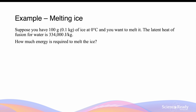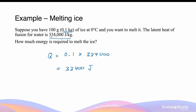Let's go through some examples. Suppose you have 100 grams of ice at zero degrees Celsius and we want to melt it. The latent heat of fusion is 334,000 joules per kilogram. To find the total energy required, we multiply the mass in kilograms by the latent heat. This gives us 33,400 joules. Note that even though the mass was initially given in grams, we must use kilograms because the latent heat is given per kilogram.